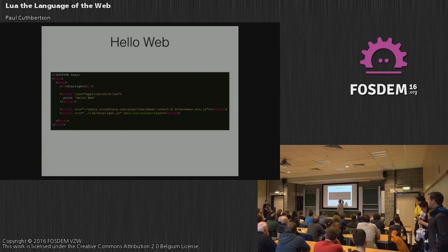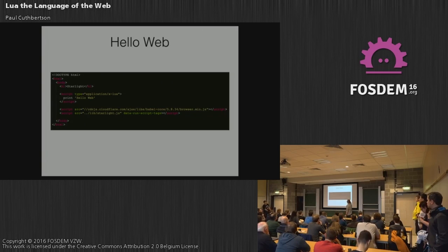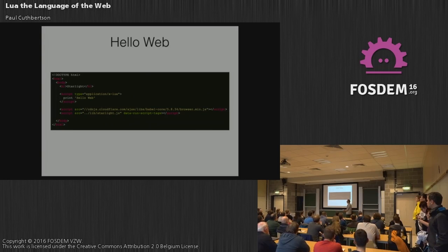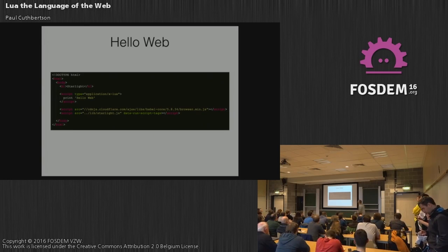You've got your Lua code here in the script tag with a Lua type. You include the Starlight library, which will take the tags marked Lua and execute them on page load if you've got the switch. It does translate it to ES6, which a lot of browsers don't handle all of just yet. So for now you need to include the Babel browser plugin — that's over 800k and it's a little bit slow. But fortunately it's not going to be around forever; browsers will take on the support natively and we can get rid of that.